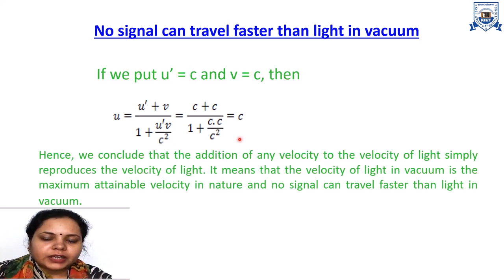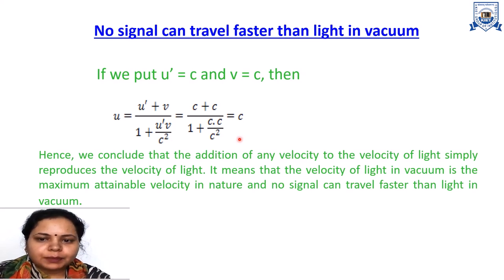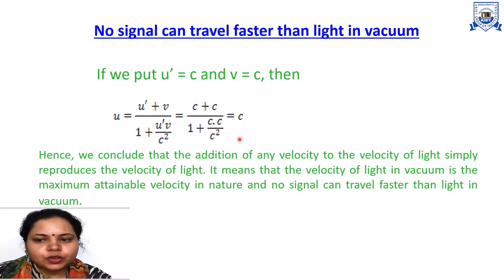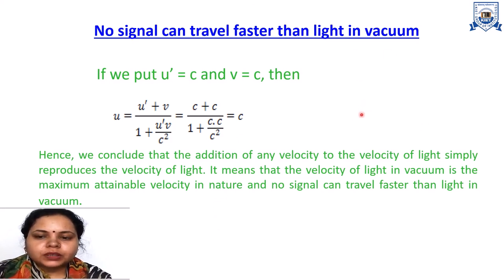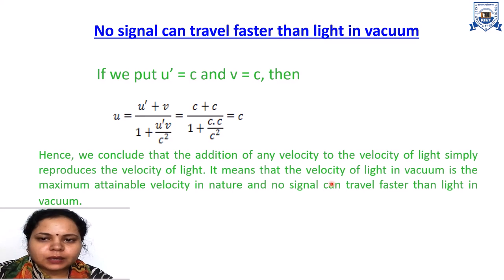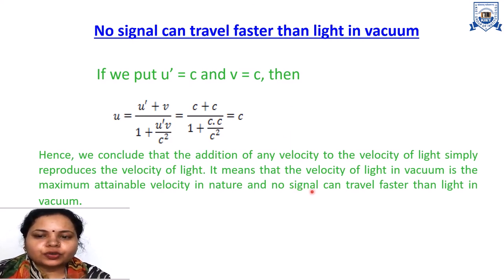So the addition of velocity theorem has great importance because of these two applications: first, consistency with Einstein's second postulate, and second, that no signal can travel faster than light in vacuum. This is all about the addition of velocity theorem. In my upcoming lectures, I will discuss variation of mass with velocity and the Einstein mass-energy equation — both are very important derivations for the theory of relativity.